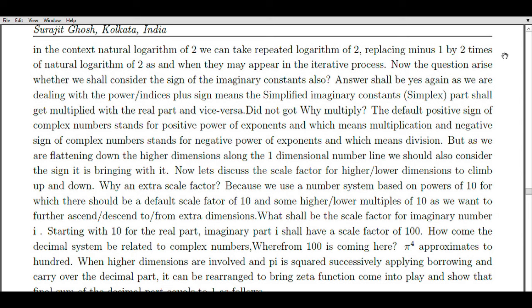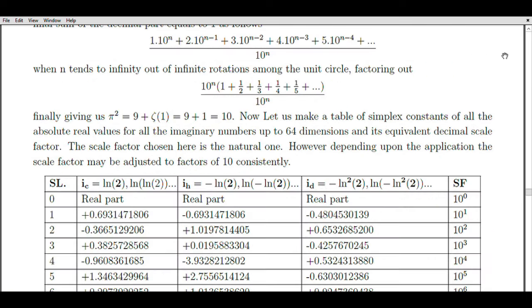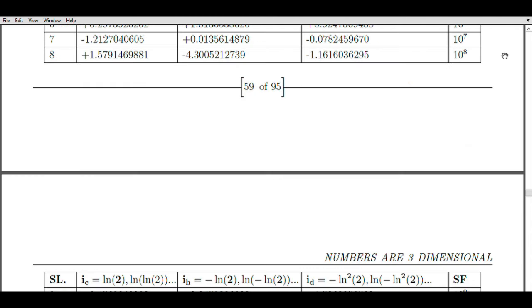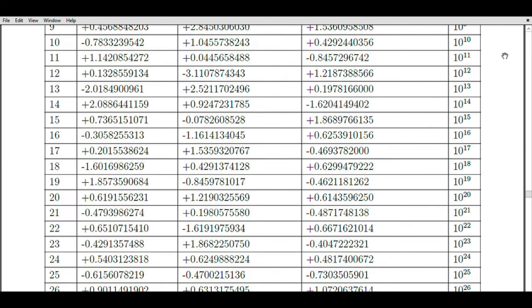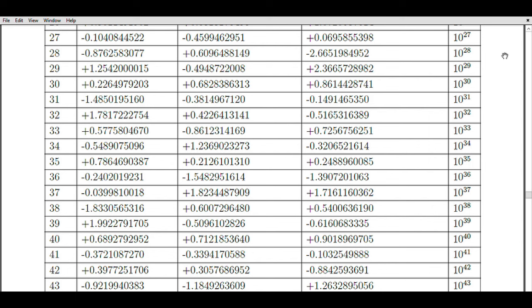Moreover, overlooking scientific works that are not immediately grasped by the scientific community can have broader societal implications. Scientific research often addresses pressing societal challenges, such as climate change, disease prevention, or technological advancements. By disregarding unconventional ideas, we may overlook potential solutions to these complex problems. Let us change the topic.